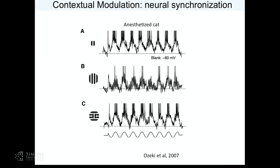This is an idea proposed decades ago — that neurons will synchronize under conditions where they're processing input extending across their receptive fields with common features like common orientation. If you look carefully at recordings from Ozeki, you notice that with powerful surround suppression, if you look at the subthreshold membrane potential, you see a massive oscillation — which I don't think they highlighted at all in that paper. It's at about 25 to 35 hertz.